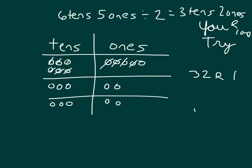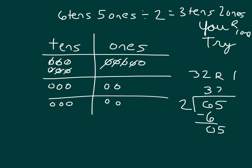Let's show you the long division that goes with this. We were dividing sixty-five by two. We divide the largest place first — the tens place — so six divided by two, or six tens divided by two, is three. Three times two gives you six; six minus six gives you zero, and we bring down the five. Five ones divided by two is two, because two times two is four, and five minus four is one. That one was our remainder. So long division also shows us thirty-two remainder one.